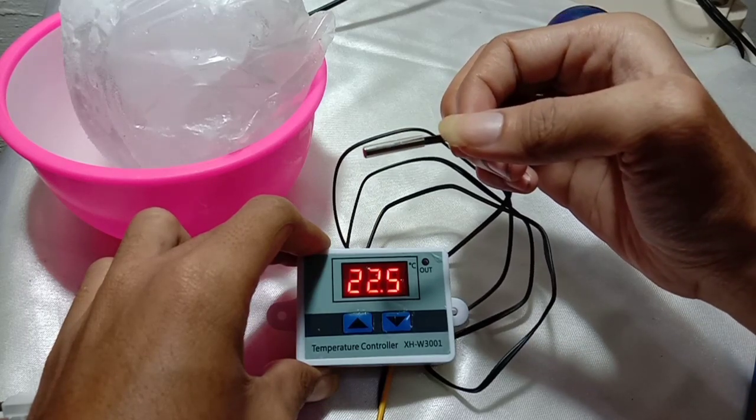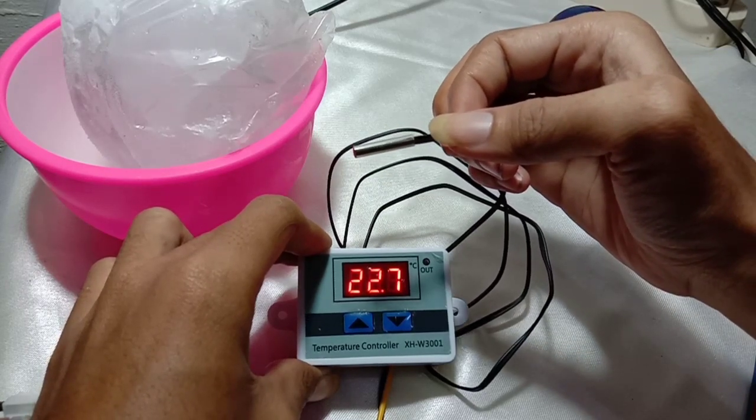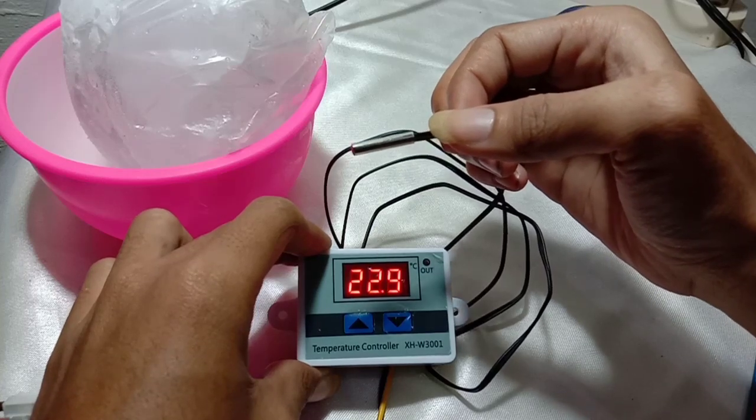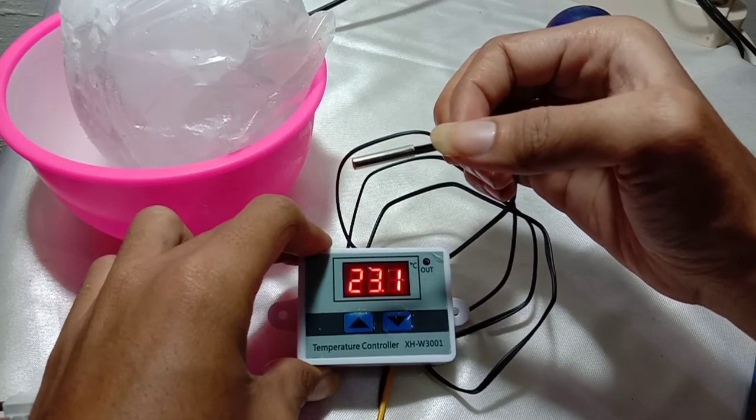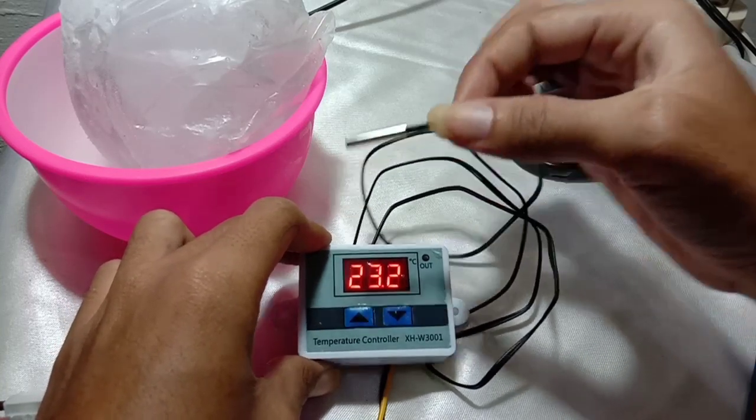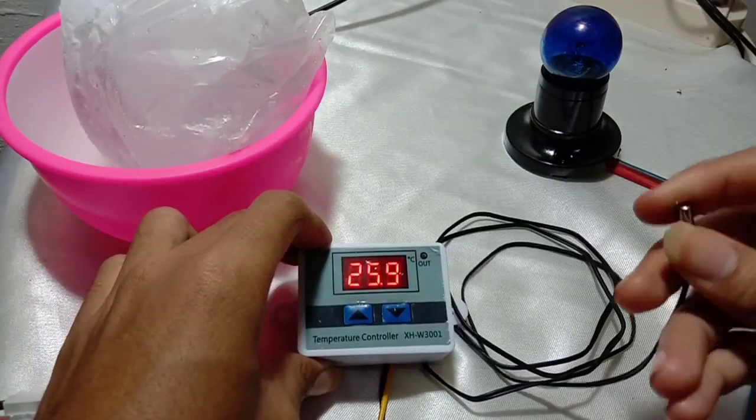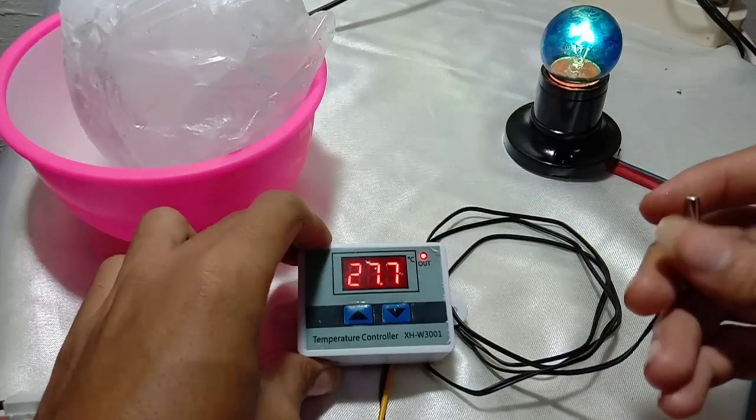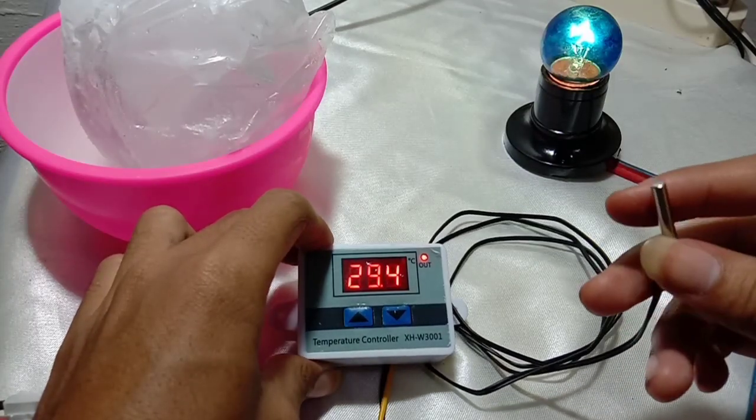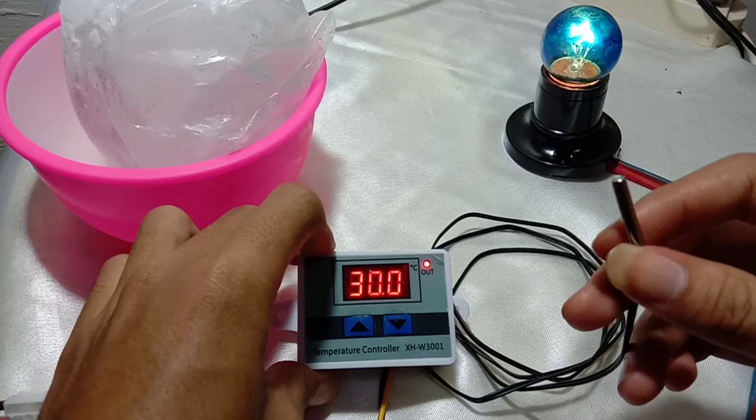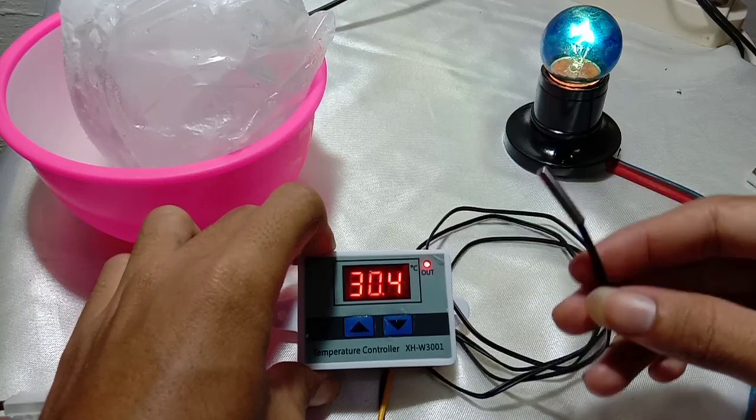If it is below 25.5, the electricity will be disconnected, and when it reaches 26.5 the electricity will be connected for a second time. This one we are using for cooling system.